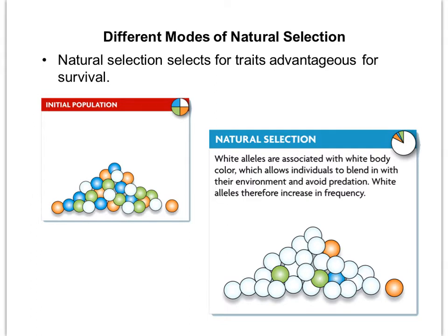Natural selection selects traits that are advantageous for survival — we can think about this as survival of the fittest. We're going to compare the pie chart in the initial population to the pie chart in the final population. Initially, four traits are evenly distributed at 25% each. In the final population, white has increased because white body color allowed individuals to blend in with their environment and avoid predation. Therefore white alleles increase in frequency. This is Darwin's idea of descent with modification — a trait advantageous in that environment will appear in greater numbers in future generations.